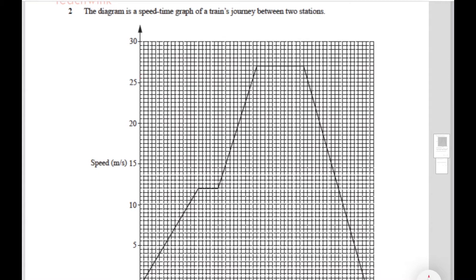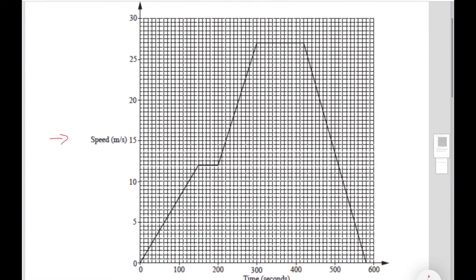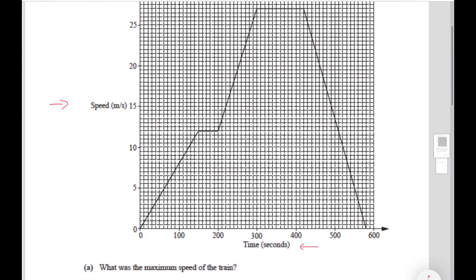The question says the diagram is a speed time graph of a train's journey between two stations. This is the speed and this axis is the time.